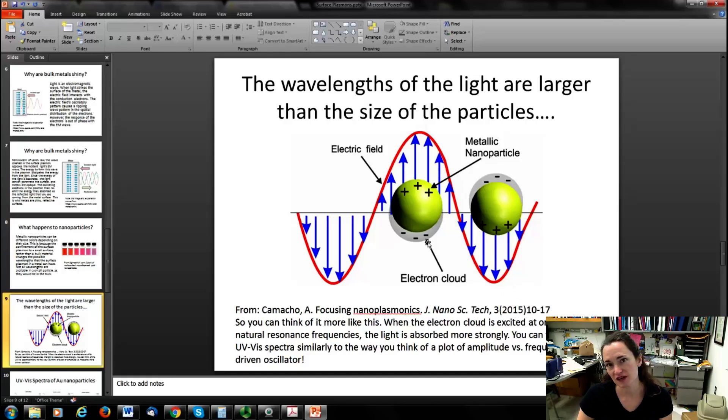So you can think of a UV visible light spectrum of nanoparticles sort of similarly to the way that you think of an amplitude versus frequency response curve for a driven oscillator. Remember driven oscillators? If you have a system like a kid sitting on a swing and you're pushing the kid, then you're going to get a large amplitude response if you push the kid at the right frequency or rate. If you don't push the kid at the right frequency or rate, then the amplitude response of the system will be teeny. So this is the idea behind a driven oscillator, and it's also kind of the same idea that you see here. If that electromagnetic wave drives the plasmon at the right frequency, you'll get a big response and a large absorption at that frequency.